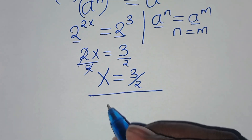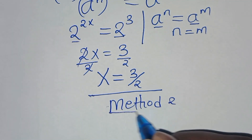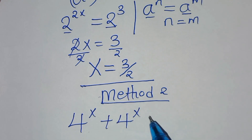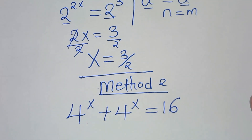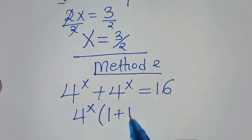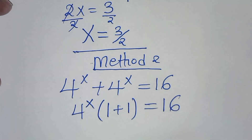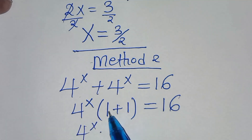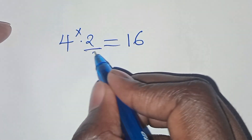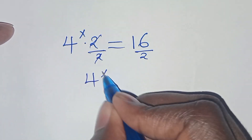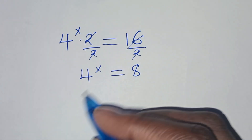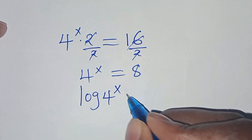Let's proceed to method 2. In method 2, we have 4 to the power of x plus 4 to the power of x, this is equal to 16. Again, since 4 to the power of x is common, we have 4 to the power of x times 1 plus 1, this is equal to 16. Dividing both sides by 2, 4 to the power of x equals 16 divided by 2, which is 8. To solve for x, we introduce logarithm on both sides: log of 4 to the power of x equals log 8.